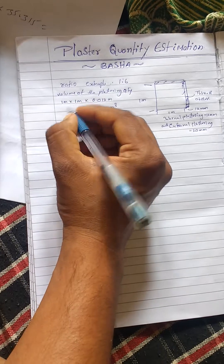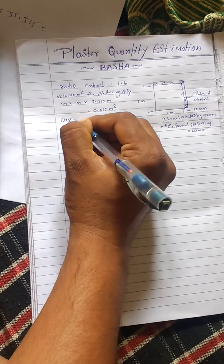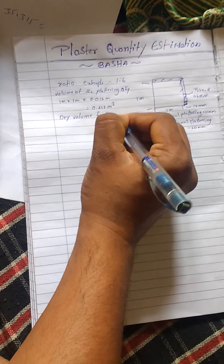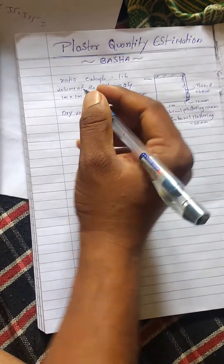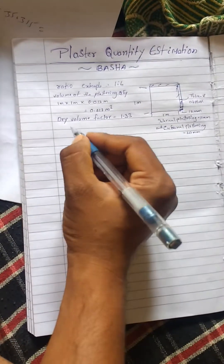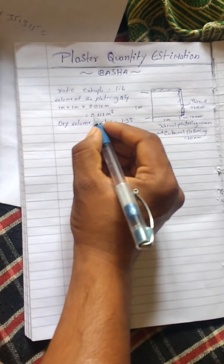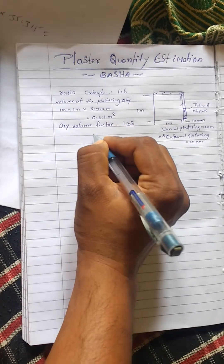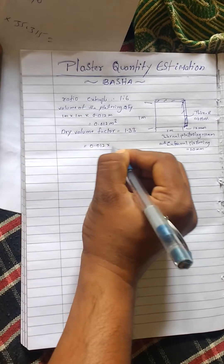But the dry volume factor — this constant factor is 1.33. So to calculate the dry volume: suppose 1 square meter, multiply 0.012 into the dry volume factor 1.33.